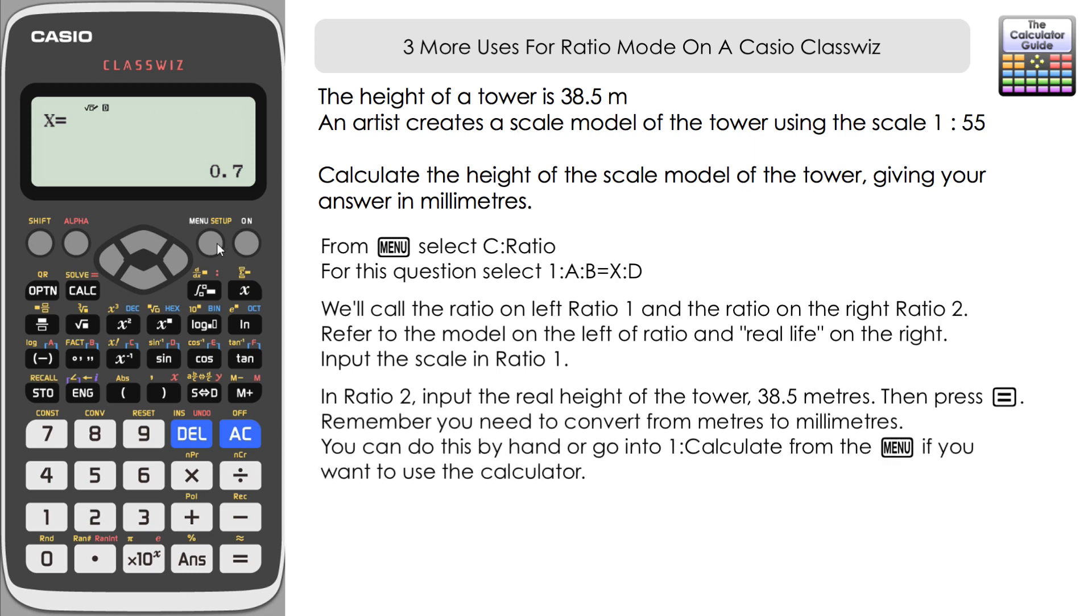But remember the question said give our answer in millimeters. So we just need to convert that. We should know that there are 1,000 millimeters in a meter. So we just need to times by 1,000. I'm just going to switch to calculate here. And then 0.7 times 1,000, it's 700, 700 millimeters.